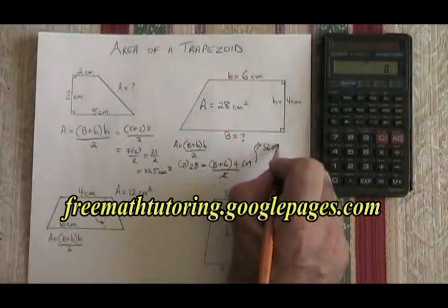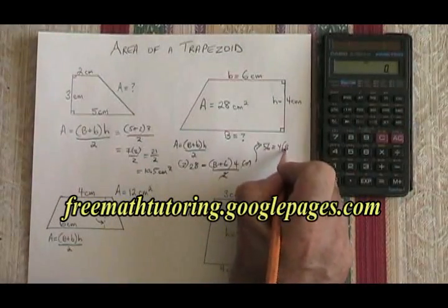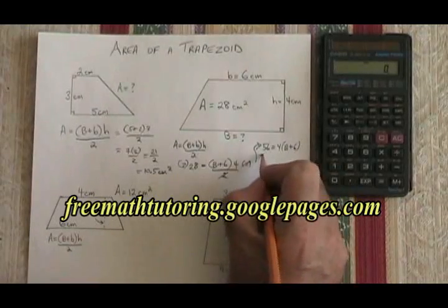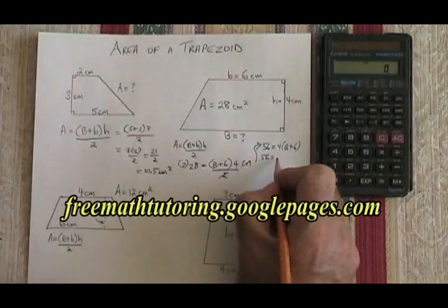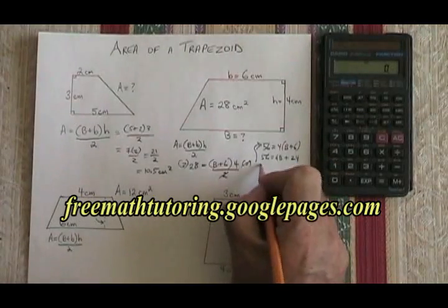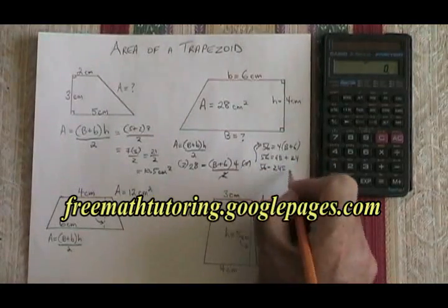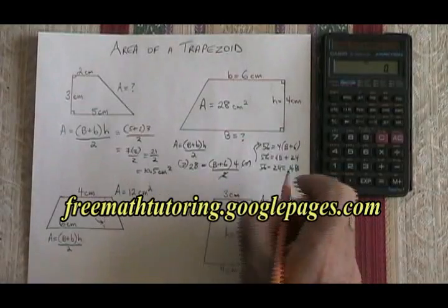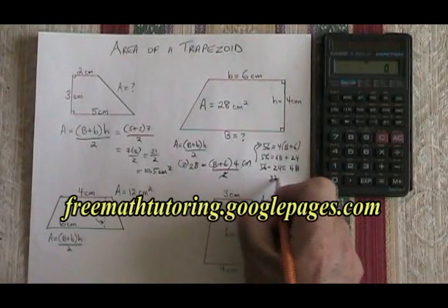Doing the multiplication across the bracket, I get 56 is equal to 4B plus 24. 56 minus 24, therefore, is equal to 4B. 32 equals 4B.